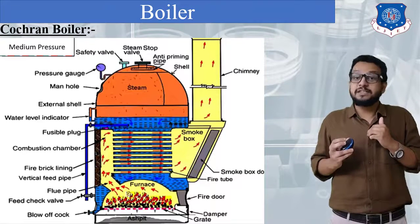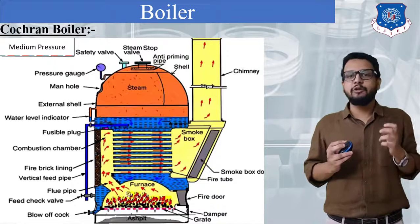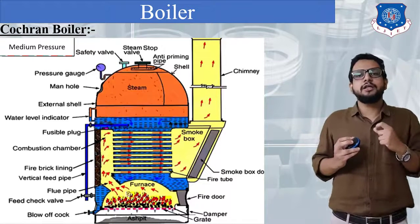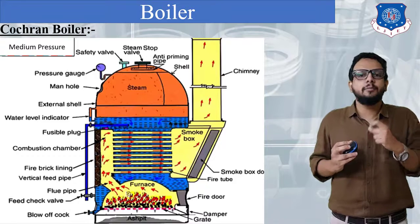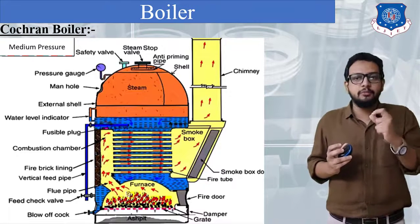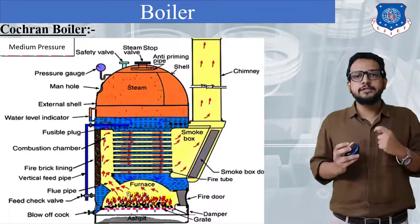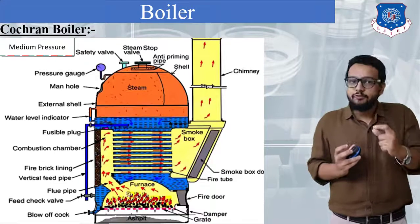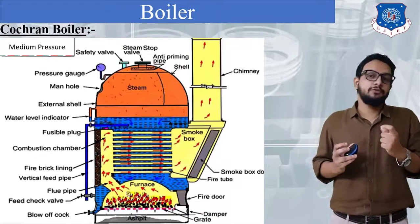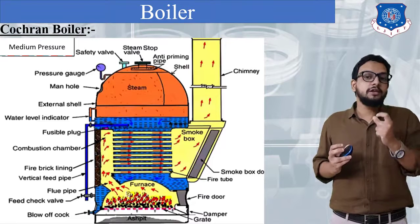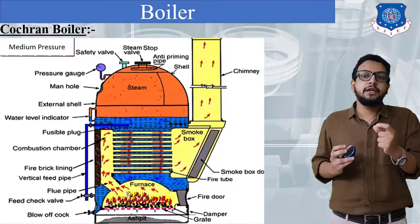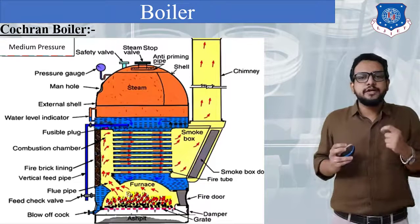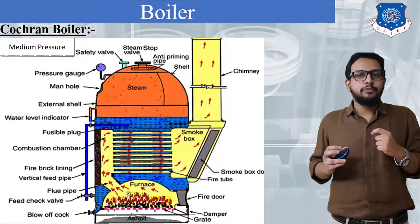Now let's look at the specification. In a specification you have to mention the dimensions of a boiler. The height of the boiler shell is nearly 5.75 metres. The diameter of the shell is 2.75 metres. The working pressure is 6.5 bar and maximum pressure is 15 bar. The steam generating capacity in one hour is 4000 kg, that is we can say 4 tonnes per hour.